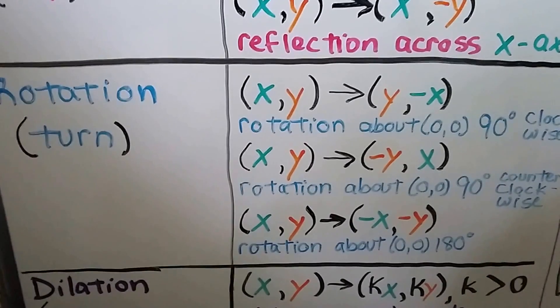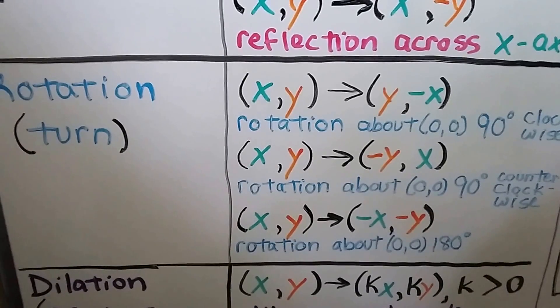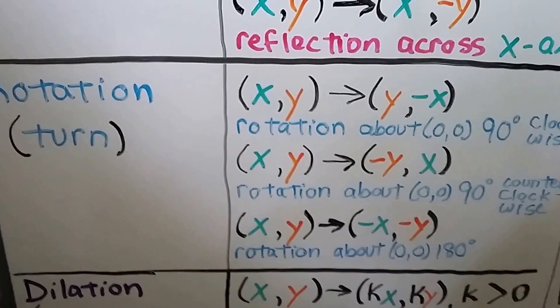And we can have x, y map as negative x, negative y, which would be a rotation about (0, 0), the origin, 180 degrees.